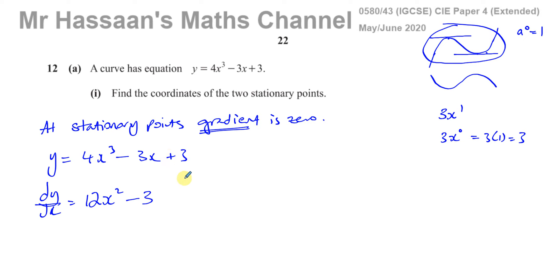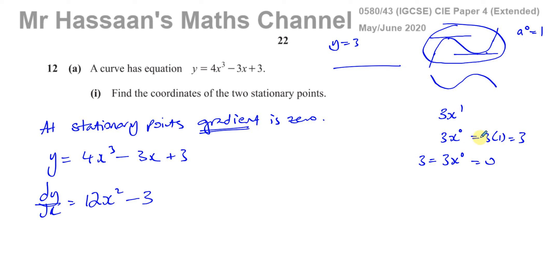Why does the constant become 0? You can think of it as: the line y equals 3 is horizontal with a gradient of 0. Alternatively, 3 can be written as 3x to the power of 0; when you differentiate, you multiply by 0, which always gives 0. So any constant term becomes 0, any x term drops the x, and all other terms follow the multiply-by-power, subtract-1-from-power rule. So dy/dx equals 12x squared minus 3, and we set dy/dx equal to 0.